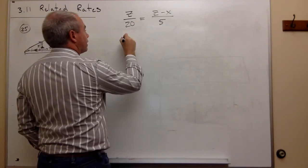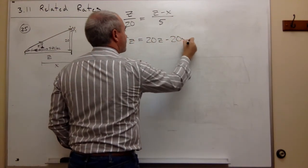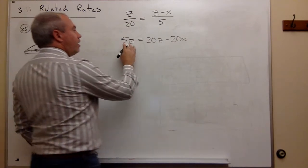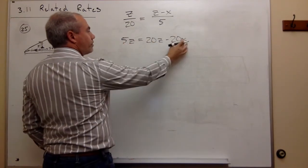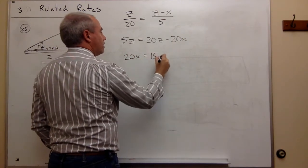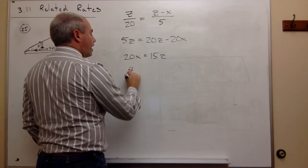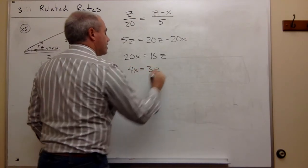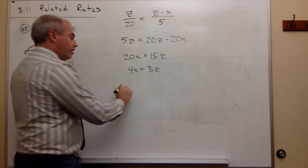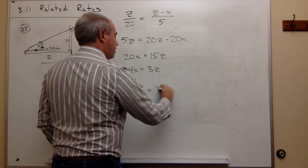Cross-multiplying gives 5z = 20z − 20x. Subtracting 5z from both sides and moving 20x over gives 20x = 15z. Dividing both sides by 5 gives 4x = 3z. Taking the derivative of both sides with respect to time: 4 dx/dt = 3 dz/dt.